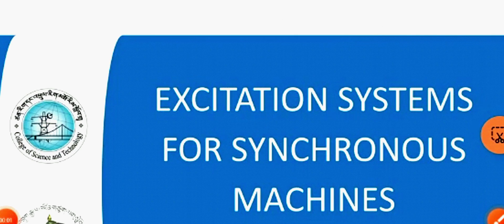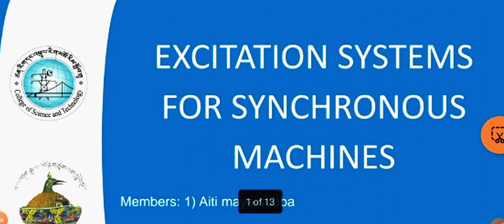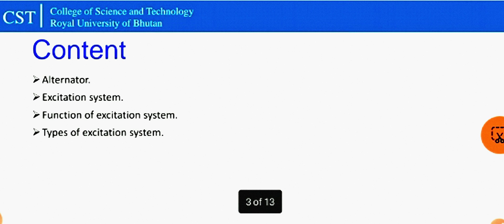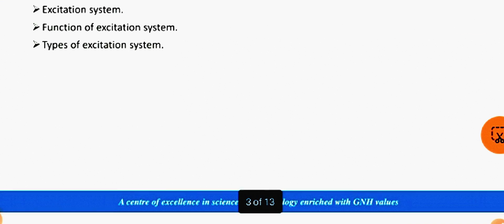Hello everyone, I am going to present on the excitation system for synchronous machine. In synchronous machine, we have the armature winding in the stator and field winding in the rotor. I am going to talk on the alternator excitation system, function of excitation system, and the types of excitation system.